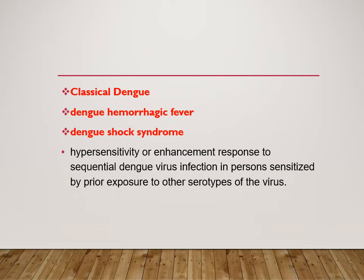These complications — hemorrhagic fever and shock syndrome — have usually been seen in persons who were previously infected with one dengue serotype and are subsequently infected with a different serotype. Individuals who were previously infected are therefore more prone to developing these complications.